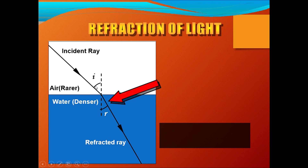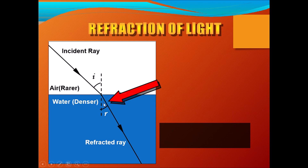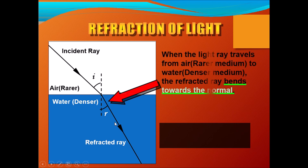The angle of incidence is always the angle between the normal and the incident ray — please remember this. After passing through the medium, the ray of light bends. This bending ray is called the refracted ray. The angle between the normal and the refracted ray is denoted as small r and is called the angle of refraction. So the angle of refraction is the angle made by the normal and the refracted ray.